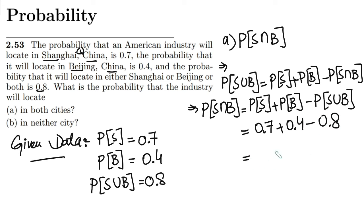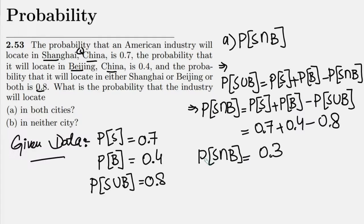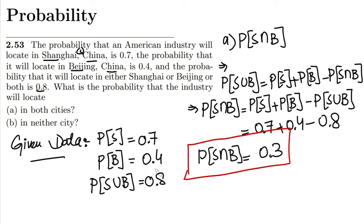Adding those values together gives 0.3, which is the probability of locating in both Shanghai and Beijing. That is the solution to part A.